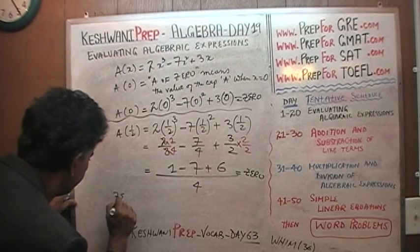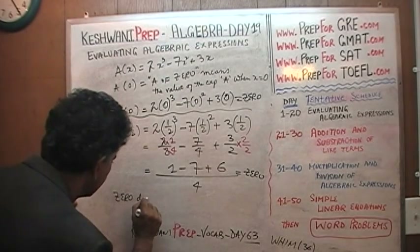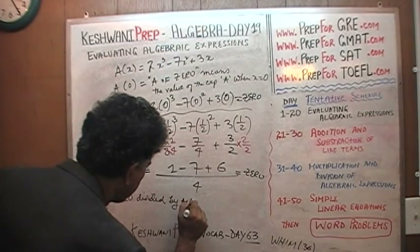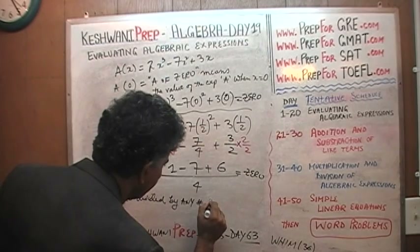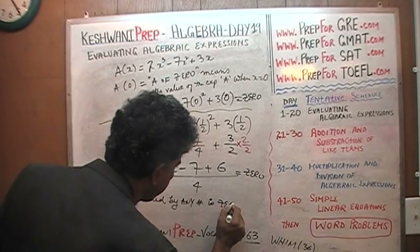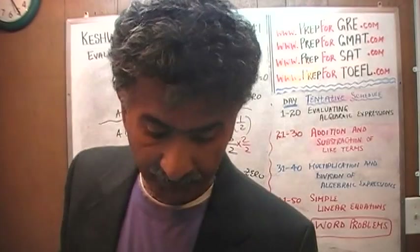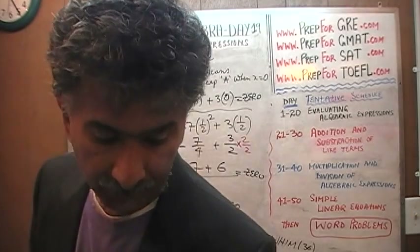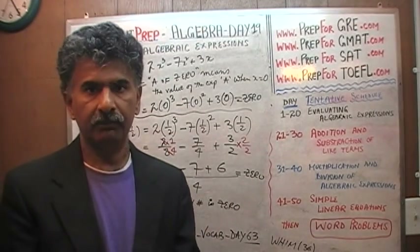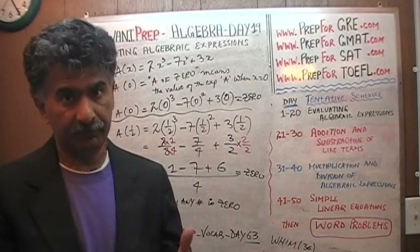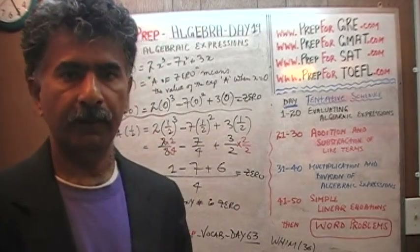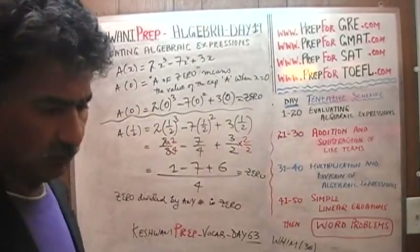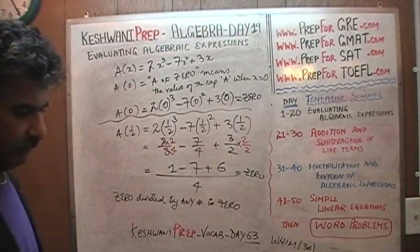Zero divided by any number is zero — which makes sense, because if you have a big fat nothing and cut it into seven parts, you still have nothing in each part. So A of one-half equals zero. We have shown that the expression equals zero when x equals one-half.